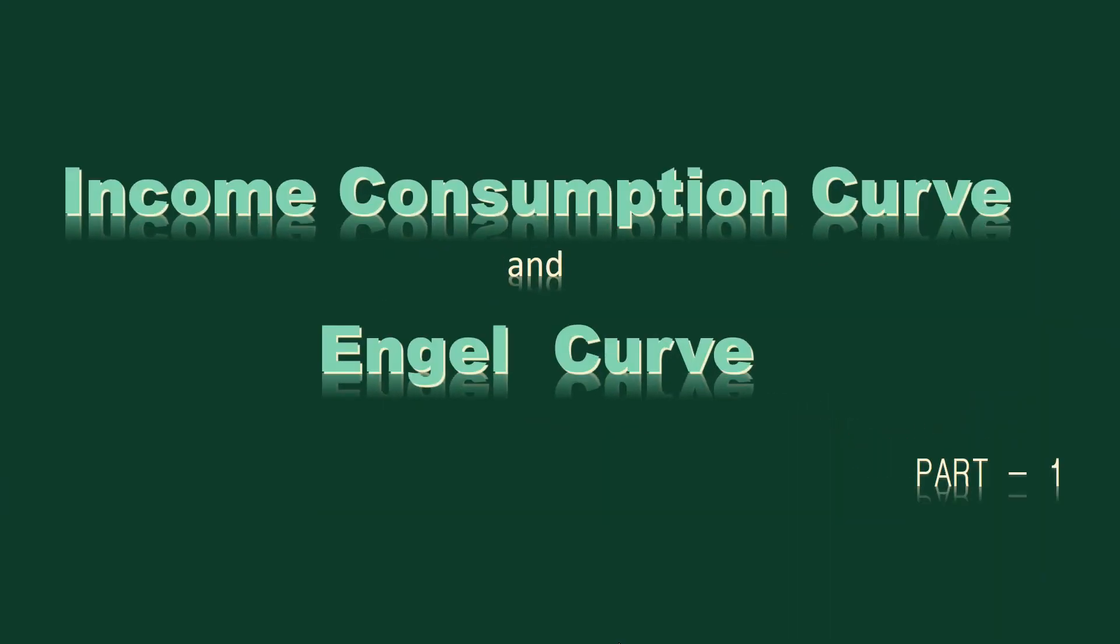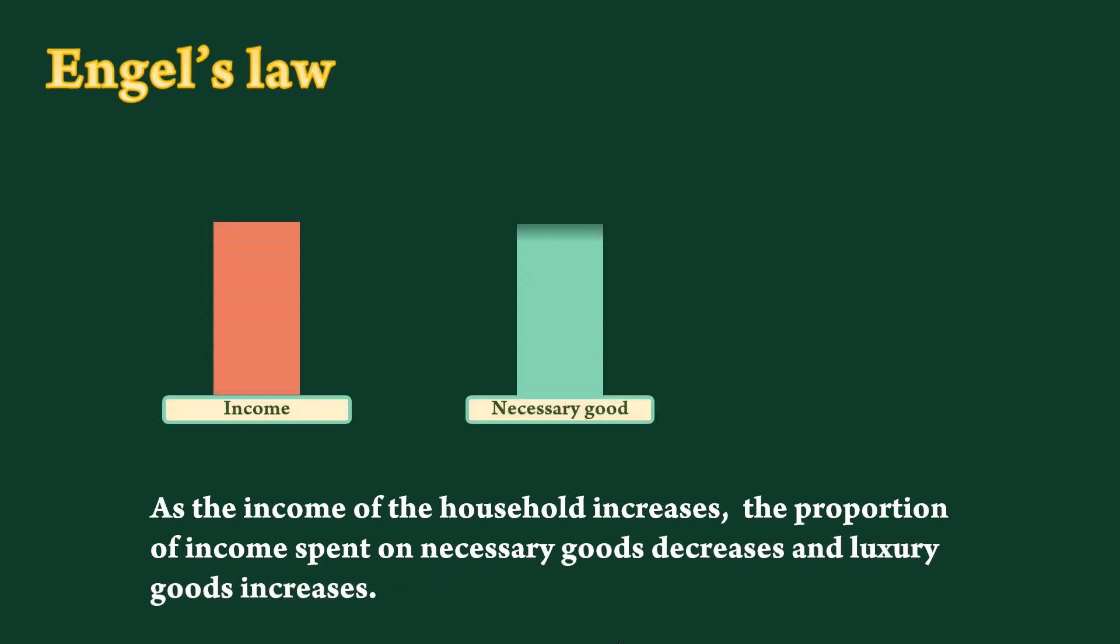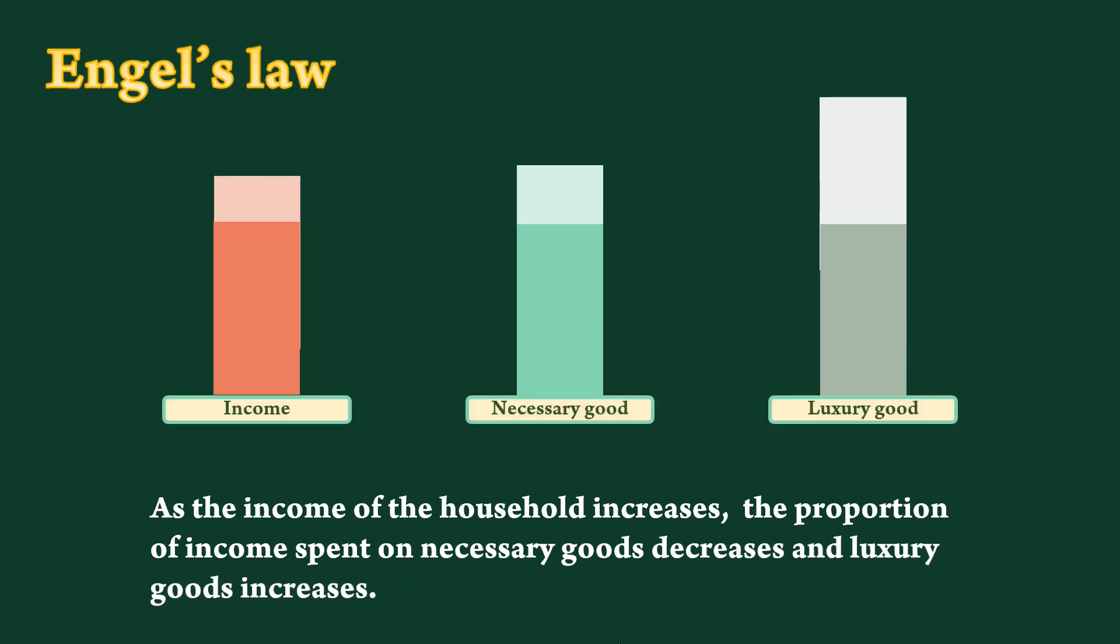Income Consumption Curve and Engel Curve Part 1. Engel's Law states that as the income of the household increases, the proportion of income spent on necessary goods decreases and luxury goods increases.